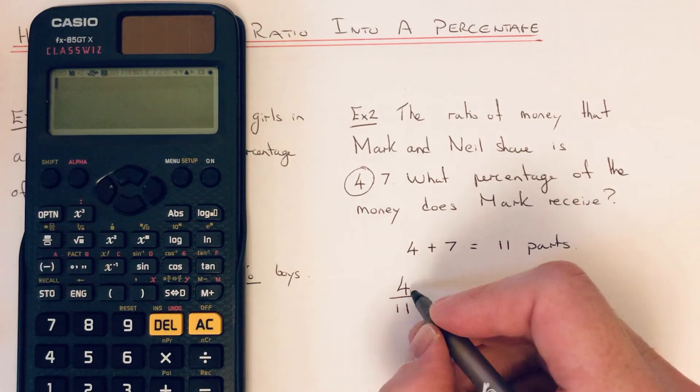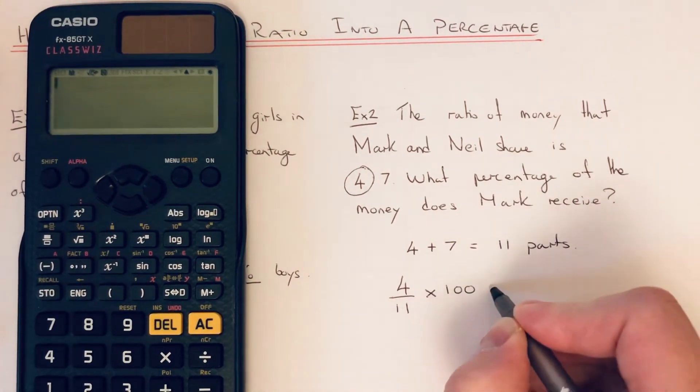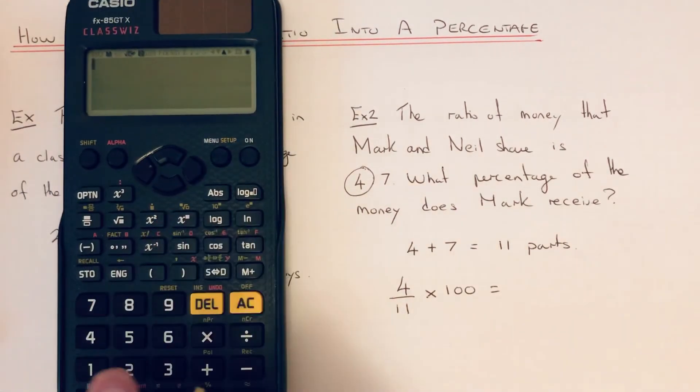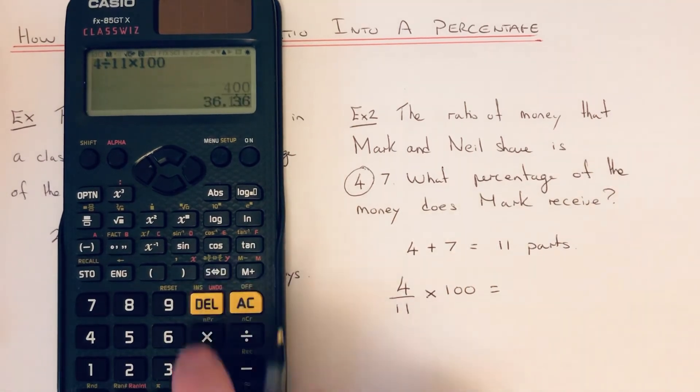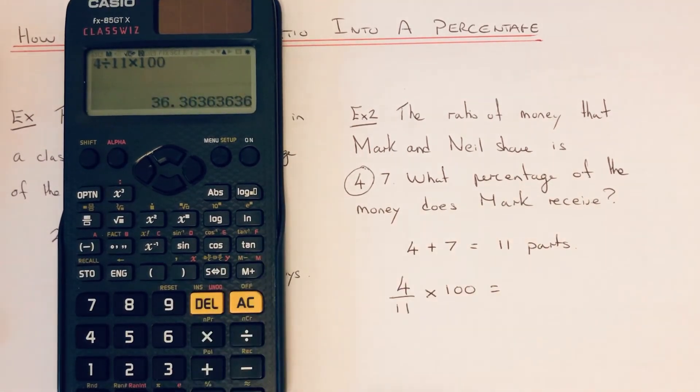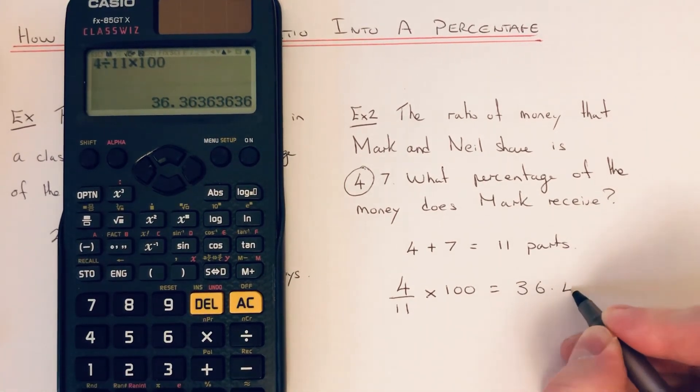We just need to now change that into a percentage by multiplying the fraction by 100. So if we go 4 divided by 11 times 100 - you could use your fraction button as well if you wanted - hit your equals, and we'll round it off to one decimal place. So we get 36.4%.